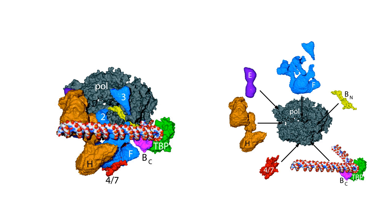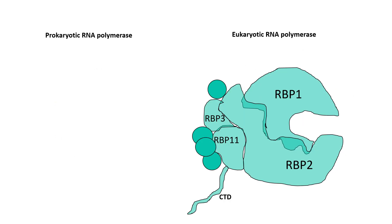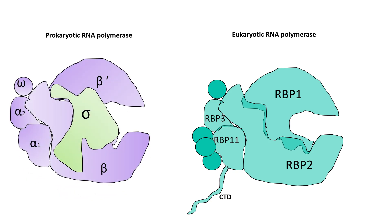RNA polymerase II and general transcription factors create a huge complex on the chromatin known as the initiation complex. Eukaryotic RNA polymerase comprises at least 12 to 15 subunits, whereas prokaryotic RNA polymerase has only five subunits. There is a dramatic structural similarity between them: in prokaryotes the active zone comprises the beta-prime and beta subunits, and in eukaryotic RNA polymerase the active zone comprises RBP1 and RBP2, which are structurally similar to beta-prime and beta. Additionally, RBP11 and RBP3 are quite similar to alpha1 and alpha2.